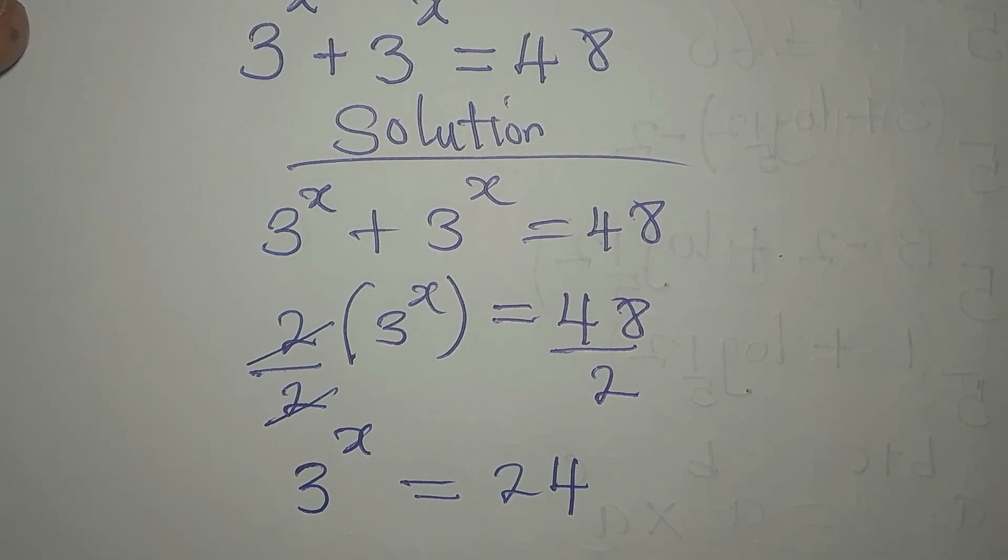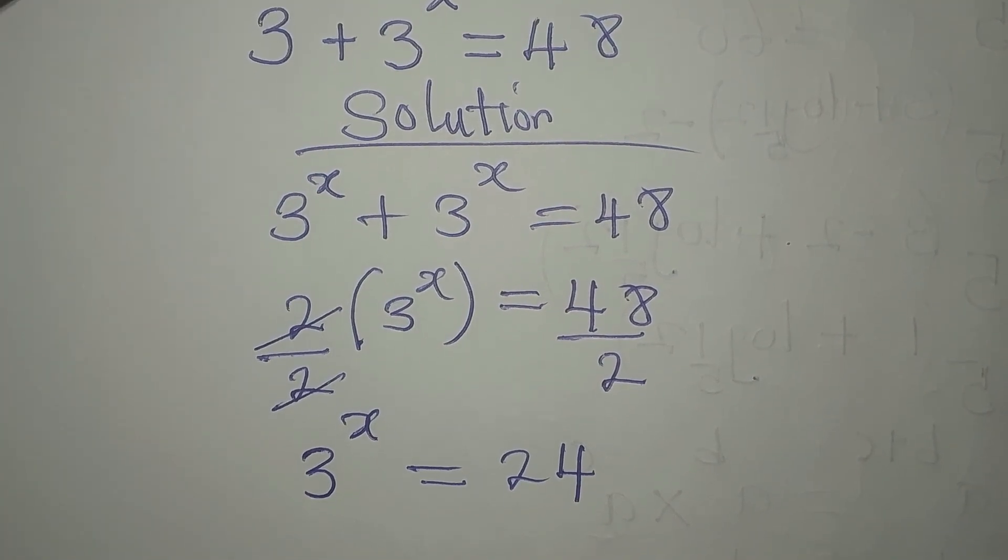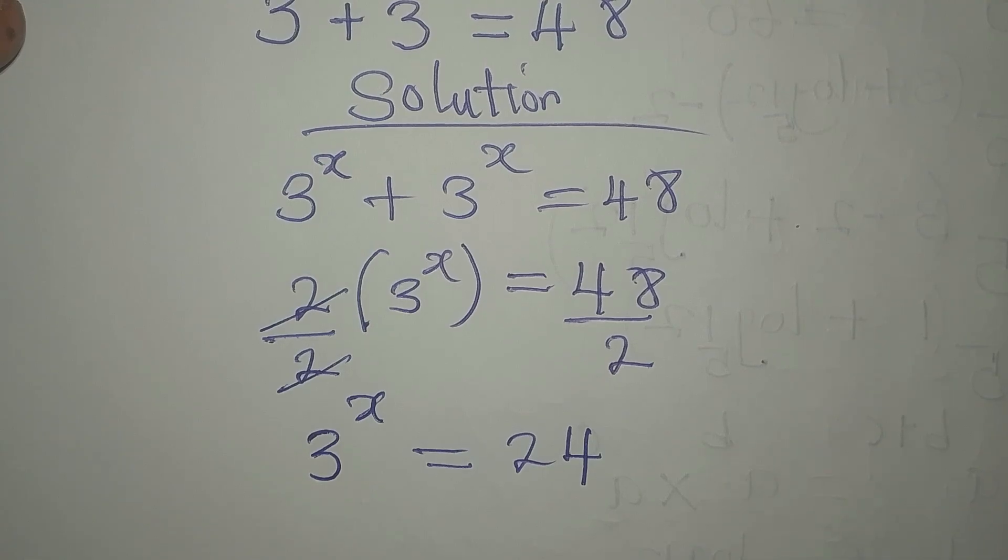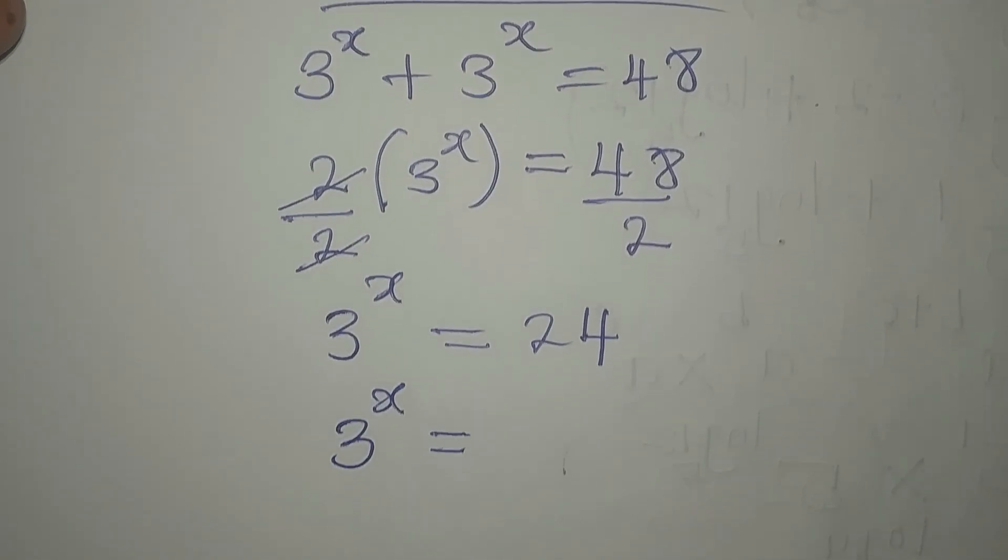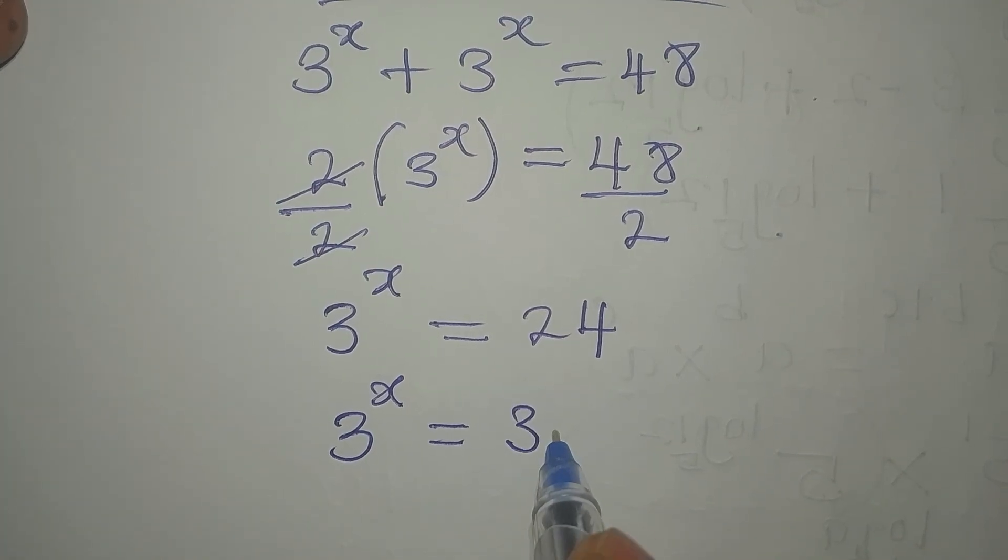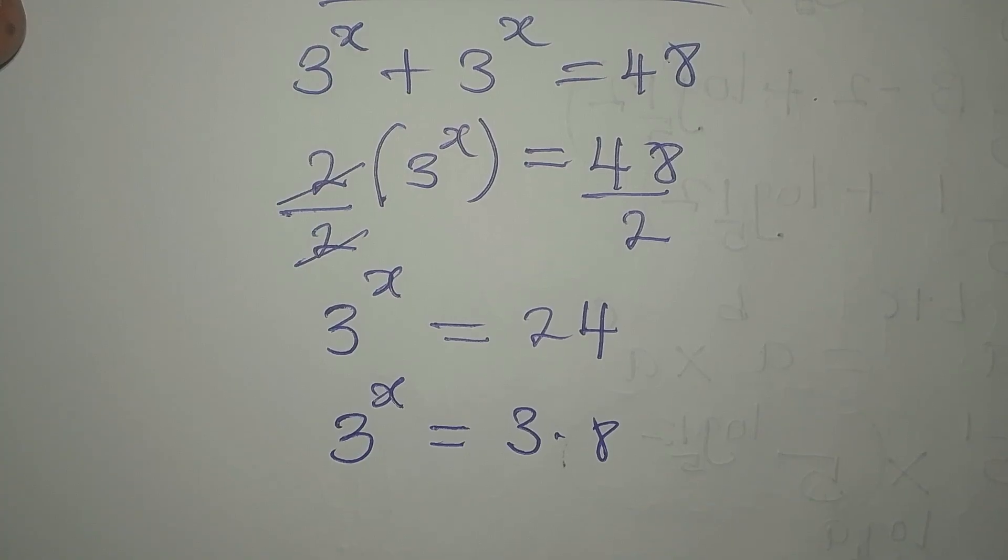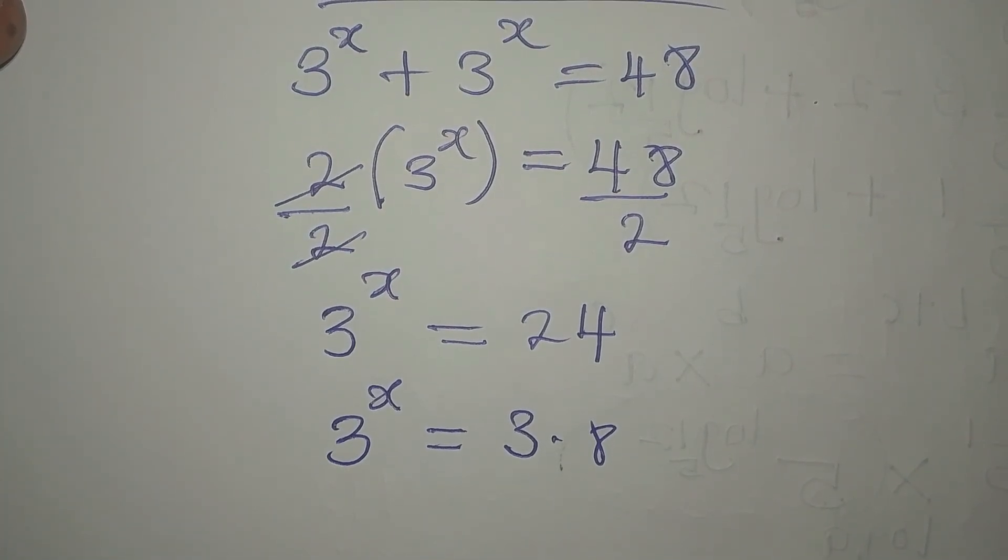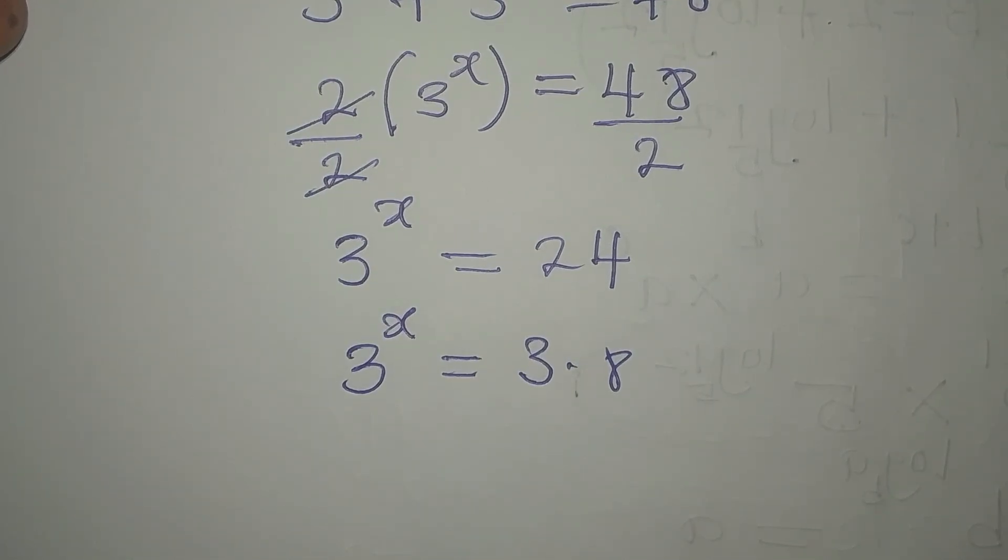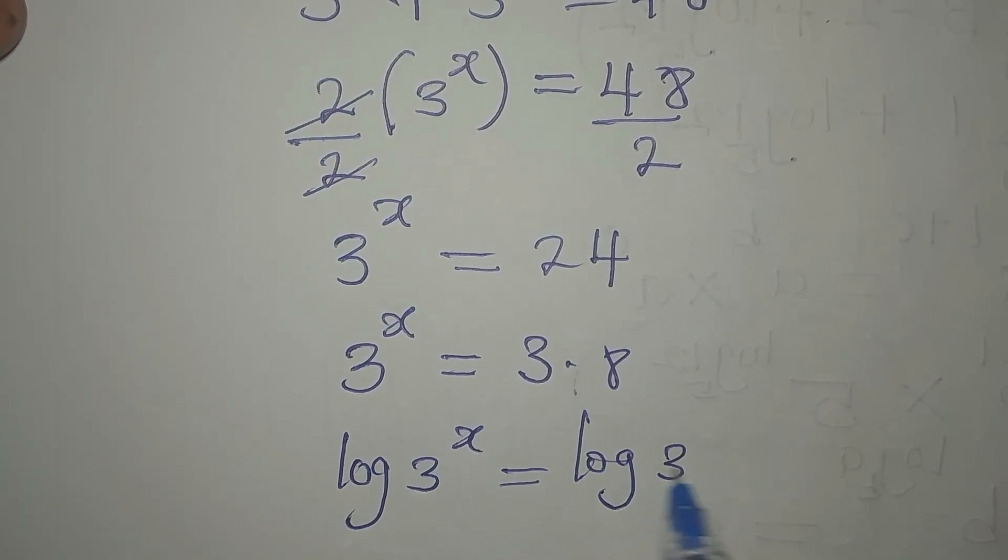The next thing we are going to do is to see if 24 can be written in this form, but it's not possible, so let's proceed. 24 is the same as 3 multiply by 8. I pick out the 3 because I have 3 on the left. So let's take the log of both sides. Now log 3 to the power of x will be equal to log of 3 times 8.